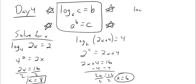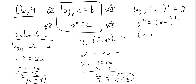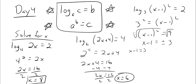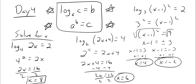Here's another one: log base three of (x minus one) squared equals two. So three to the second power equals (x minus one) squared, giving (x minus one) squared equals nine. Take the square root of both sides — don't forget plus or minus — so x minus one equals plus or minus three. That gives two answers: x equals four and x equals negative two.